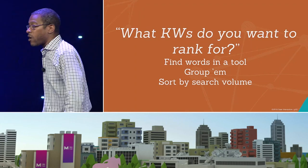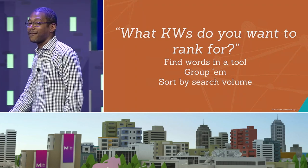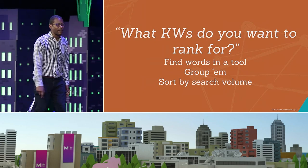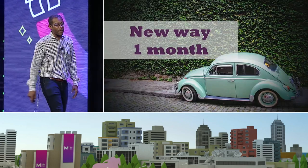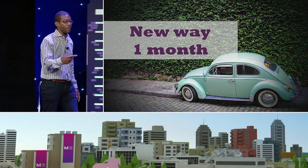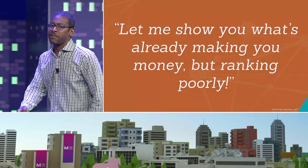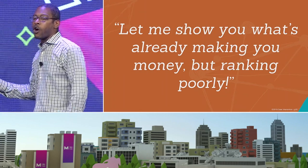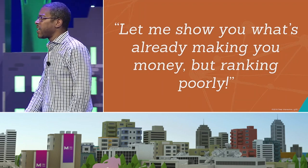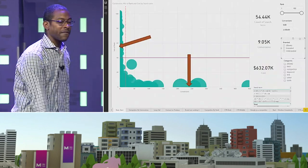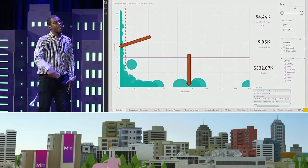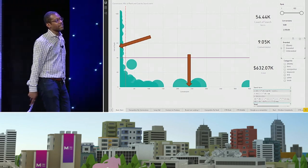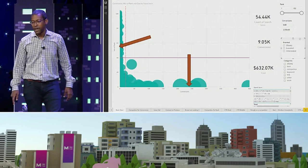The old way: I'd ask a client what keywords they want to rank for, drop them into some tools. The new way is going to take you about a month. I don't ask them that anymore — I pull their paid data and say, 'Let me show you what's already making you money but isn't ranking in the ideal spot.' On the bubble chart, the left axis is rank — lower is better — and the x-axis is conversions — further out is better.